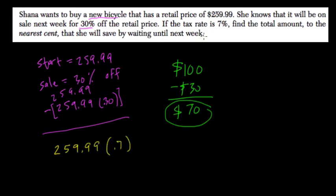But then they say the tax rate is 7%. So we're going to add 7% to this amount. So how do you add 7%? Well, think back to 100. If you have $100 and you add 7%, you would add $7, right?